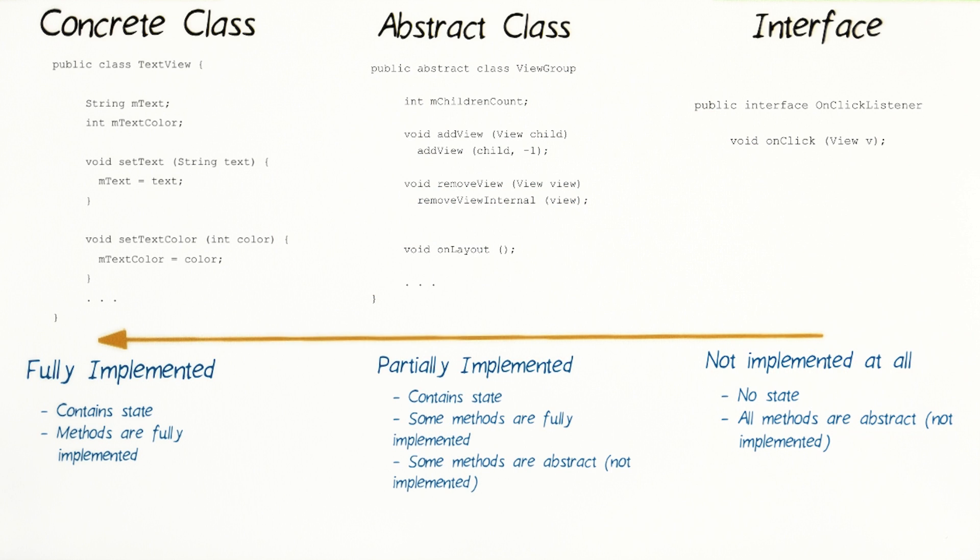So in this abstract class case, we want to standardize some behavior about view groups being a container of multiple child views. However, the details of how to lay out the views on the screen is left undefined, for the subclass to determine. In this case, LinearLayout and RelativeLayout are subclasses of the view group class. They each define their own rules for how views should be laid out on the screen.